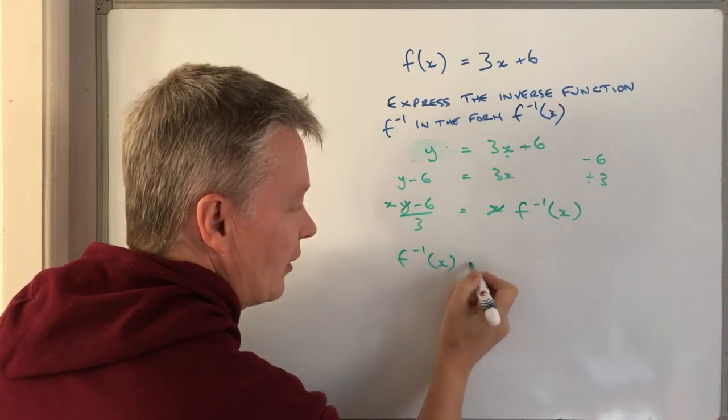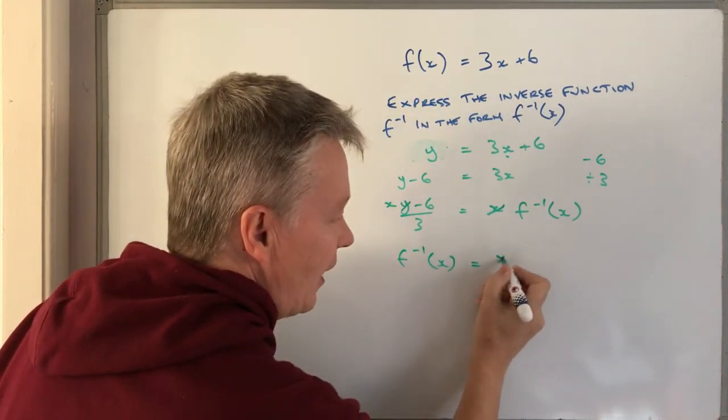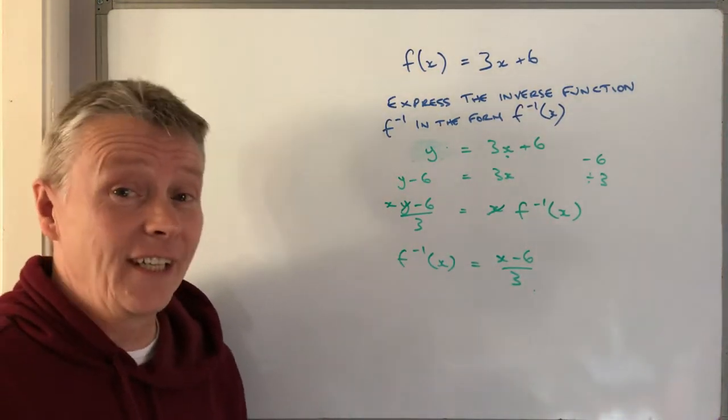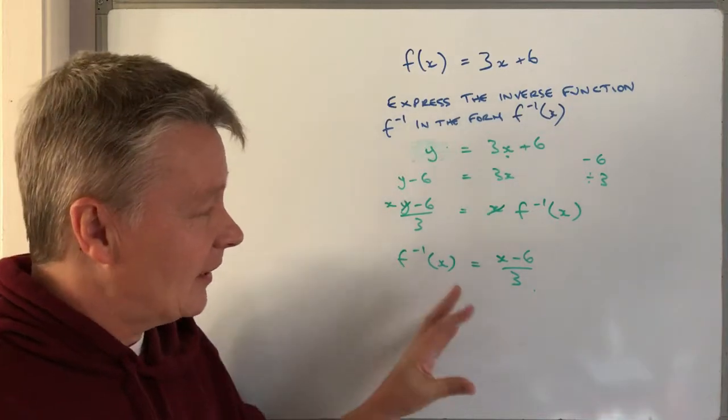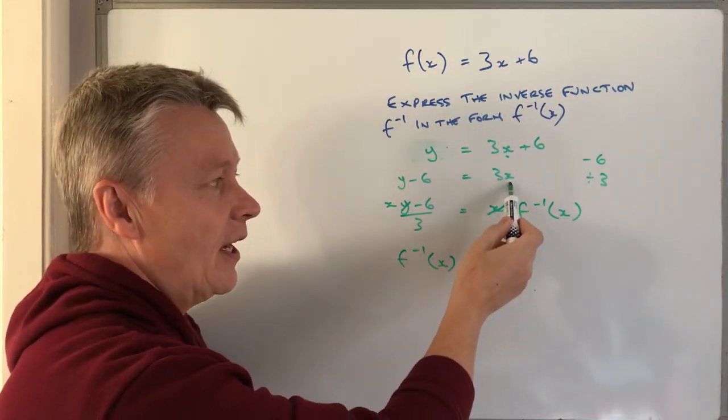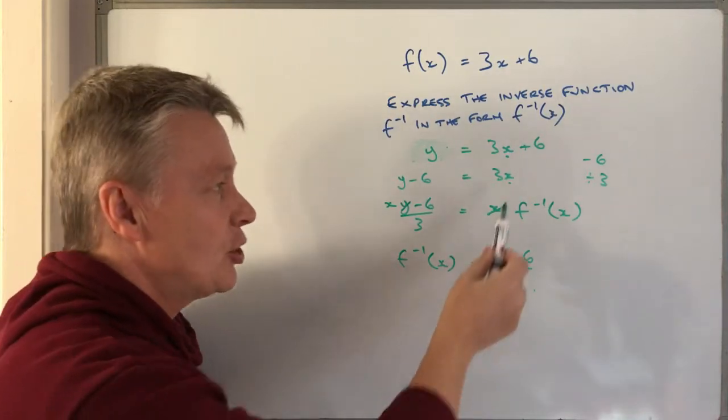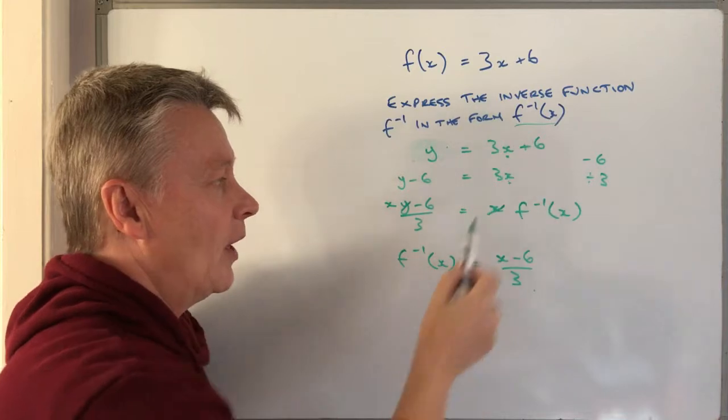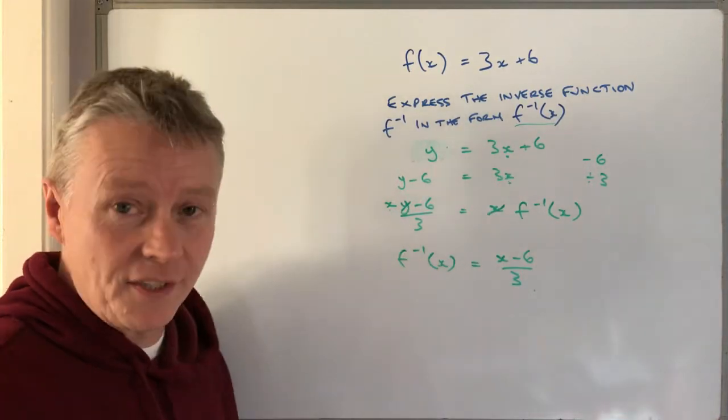If I write this correctly it's going to give me f to the power of minus 1 function of x equals x minus 6 over 3, and that is the answer. The method to use is to swap it over so you get x to be the subject, change that x to the required subject, and change the y back to x again.